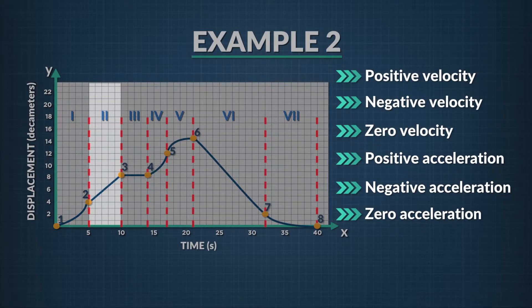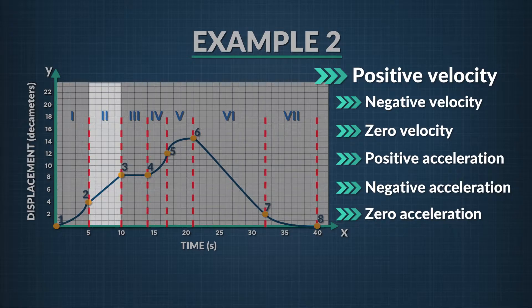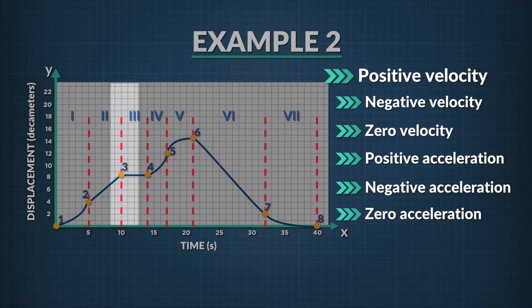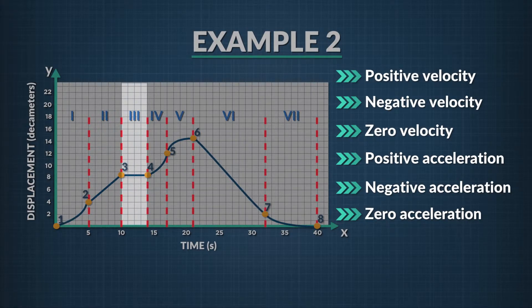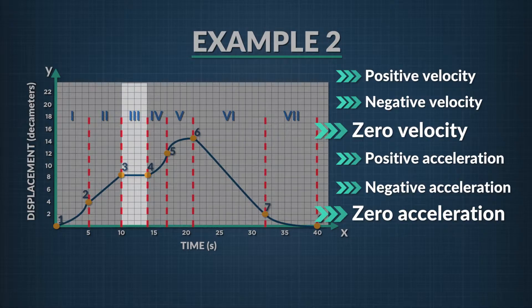In region 2, the slope of the line is still positive, but it stays the same. This means the go-cart is no longer accelerating, but it does have a positive velocity. In region 3, the slope of the displacement versus time graph is zero, meaning the cart is not moving. Its acceleration and velocity are both zero.